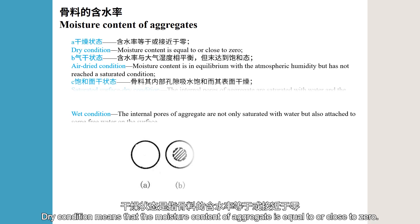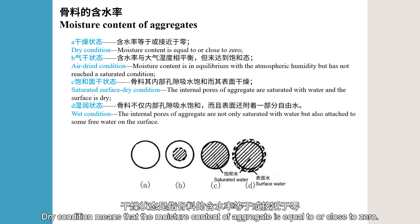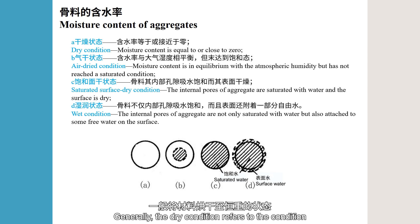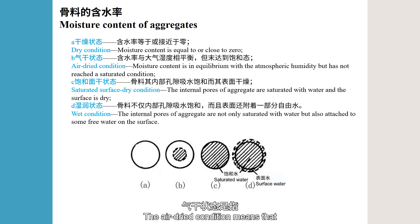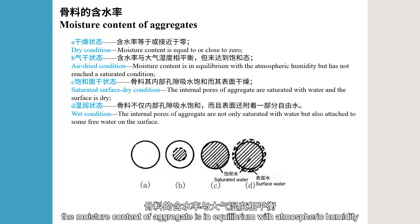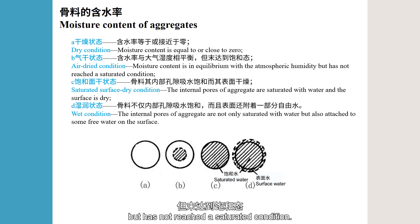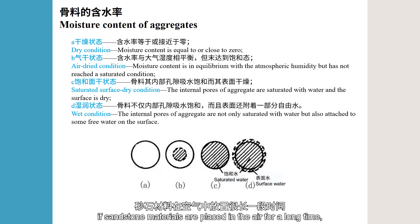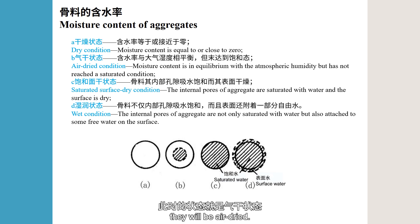Dry condition means that the moisture content of aggregate is equal to or close to zero. Generally, the dry condition refers to the condition when the material is dried to constant weight. The air-dried condition means that the moisture content of aggregate is in equilibrium with atmospheric humidity but has not reached a saturated condition. For example, if sandstone materials are placed in the air for a long time, they will be air-dried.